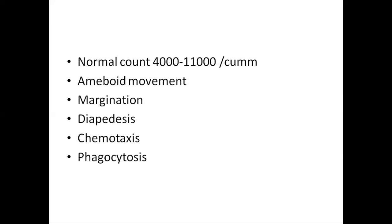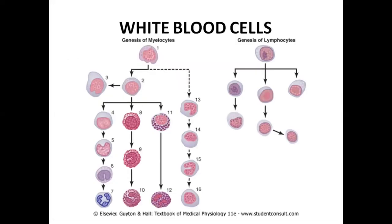Diapedesis is the moving out of WBCs through the pores to go towards the site of infection. Chemotaxis is the attraction of WBCs towards the source of infection. Phagocytosis is the engulfment or digestion of the invading agent, for example bacteria. Now we move to the genesis of white blood cells.